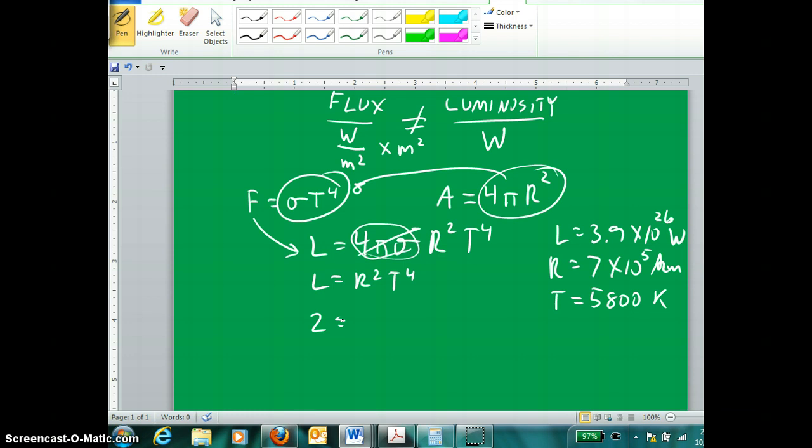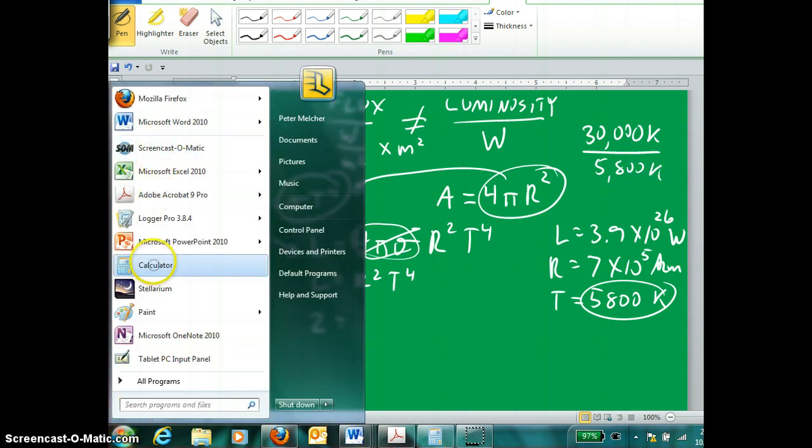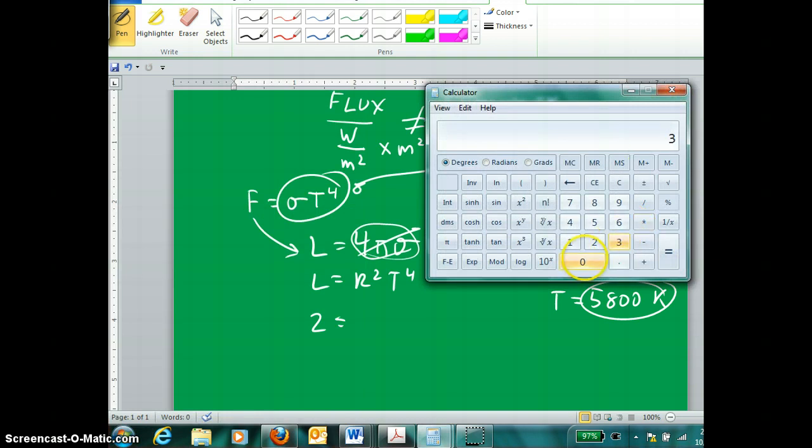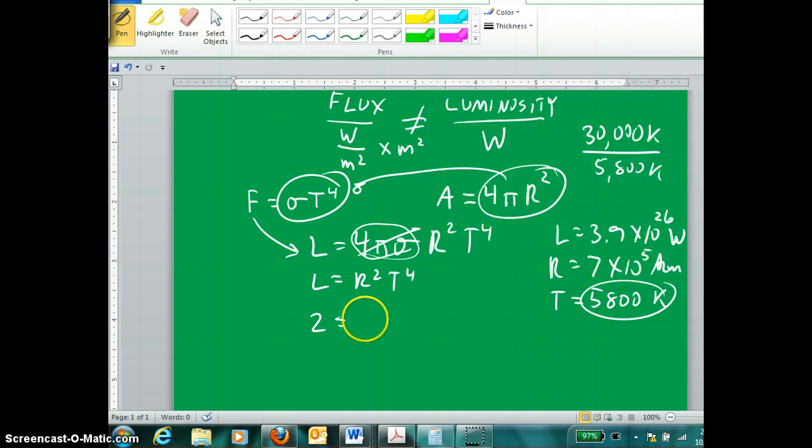And if I examined its black body curve, then I noticed that its temperature was around 30,000 kelvins. I could then, say, take our temperature, our star's temperature, and calculate the relationship between the two, which would simply be 30,000 divided by 5800.